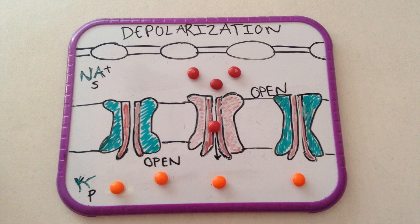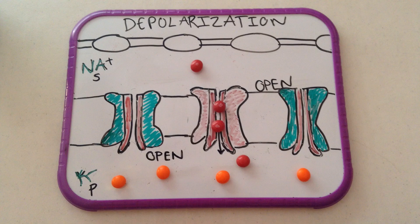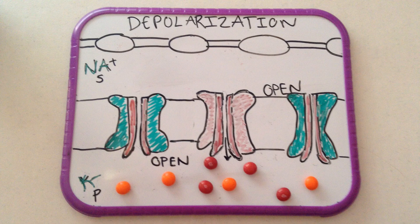As sodium moves across the membrane, the voltage-gated potassium channels, which is a channel for the passage of potassium ions, and its job is to recover the nerve fiber membrane at the end of the action potential, opens, but at a slower rate. Depolarization happens because more sodium ions go into the cell than potassium ions come out.